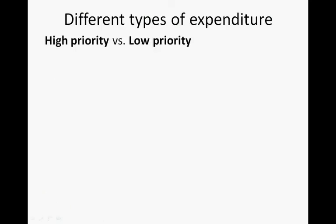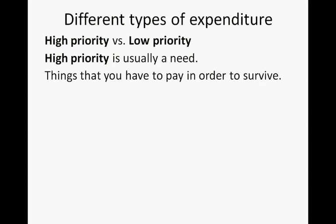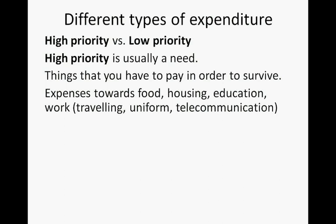Different types of expenditure: high priority versus low priority. High priority expenditures are usually needs — something that you need to pay in order to survive. These are expenses towards food, housing, education, and work. These are things that you need to make a living or to improve your standard of living. Expenses towards work can include traveling, uniforms, or telecommunications, like a cell phone or computer needed for work purposes.